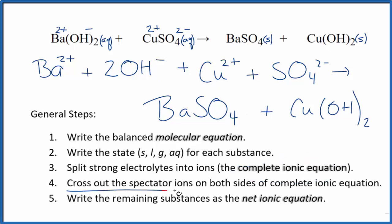We could now cross out spectator ions, except there aren't any, so everything is unique on both sides. That makes this the net ionic equation for Ba(OH)₂ plus CuSO₄. So the complete ionic equation is the same as the net ionic equation here.